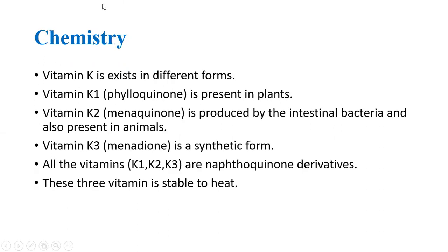Now we will be discussing about the chemistry of vitamin K. Vitamin K exists in different forms. Vitamin K1, i.e. phylloquinone, is present in plants, while vitamin K2, menaquinone, is produced by intestinal bacteria and is also present in animals. Vitamin K3, menadione, is a synthetic form of vitamin K.